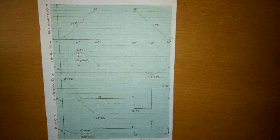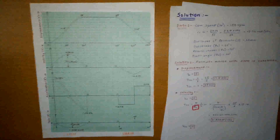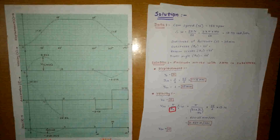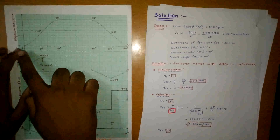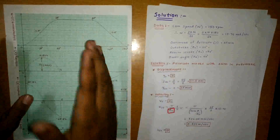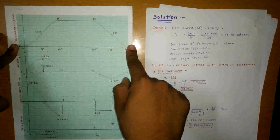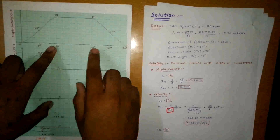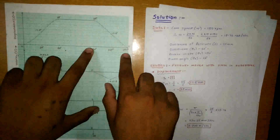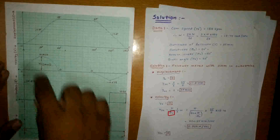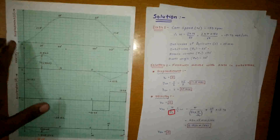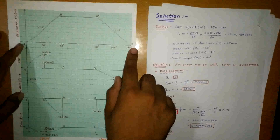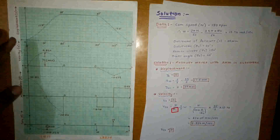Now let's start plotting the values. For displacement you can take any scale, but do remember to put proper values at proper places. For example: 0°, 30°, 60° — make sure your graph is complete between these ends. Then 0°, 30°, 60°, then the dwell of 40°, giving 100°, then 145° and 190°. For SHM the displacement graph is a curve, and for URM the displacement graph is a straight line.